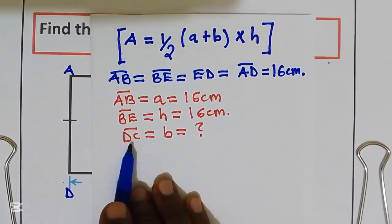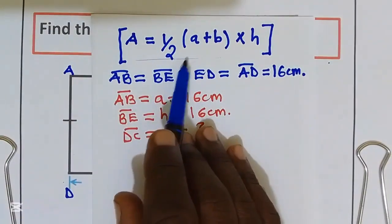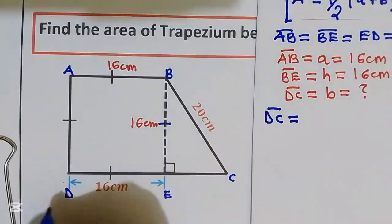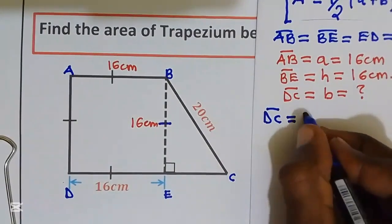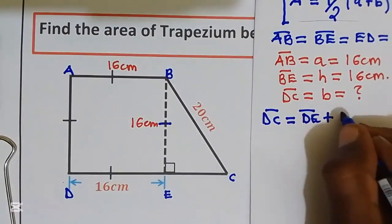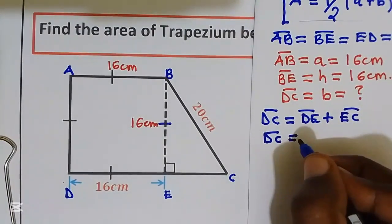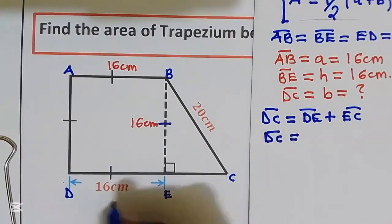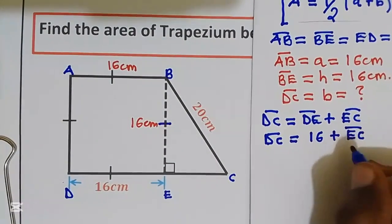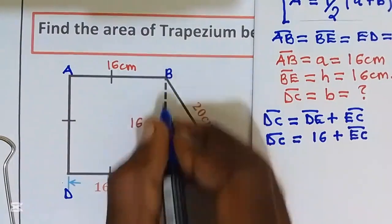First, let us find distance BC so we can use our formula to get the area. Distance DC is equal to distance BE plus distance EC. So distance DC equals BE, which is 16, plus distance EC. But we don't have distance EC — we are going to use triangle BCE and apply the Pythagorean theorem to find distance EC.